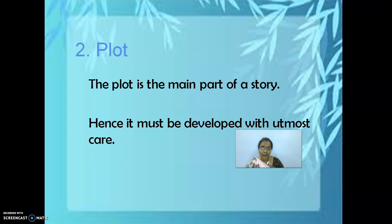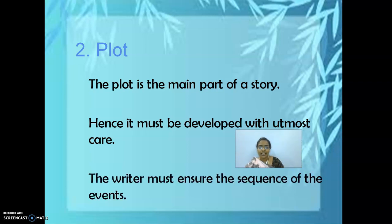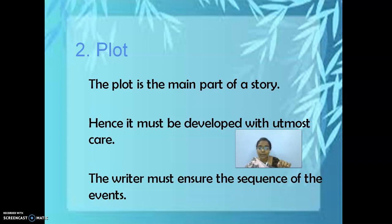I have told you how the introductory part should be, and how you have to develop your plot. Since the plot plays the main part of a story, it should be developed with utmost care. Next, the writer must ensure the sequence of events — that is what coherence means: one after the other. The writer must be careful about how he is going to write the story, in which way, and how he is going to bring all the elements and events together.